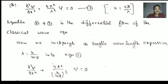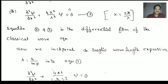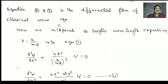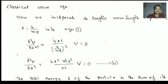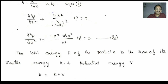Now we incorporate the de Broglie wavelength expression: λ = h/mv into equation 3. According to de Broglie, lambda is h divided by mv, where h is Planck's constant, m is the mass, and v is the velocity of the particle — the electron. Substituting: ∂²ψ/∂x² + (4π²m²v²/h²)ψ = 0. This is equation number 4.